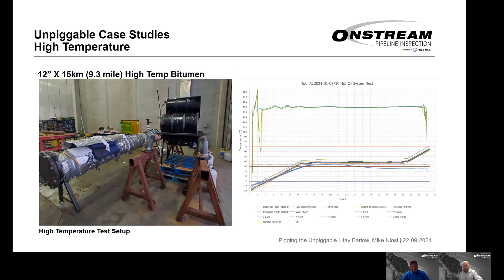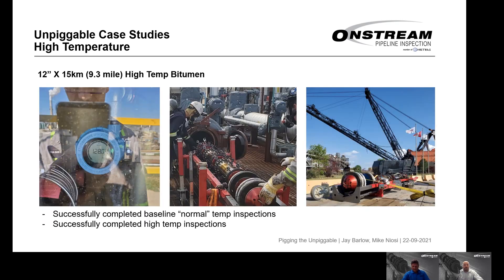This required a custom-built high-temperature, high-resolution IMU and geometry tool developed from the ground up. One of the final tests involved running the tool live in a chamber filled with 150°C oil to ensure all electronic components operated throughout the tool's full operational life — running until the batteries were nearly dead, achieving almost 24 hours. We then did a baseline IMU inspection at normal pipeline temperature to confirm position, then completed high-temperature inspections during hot service, detecting pipeline movement. This was a very successful project.